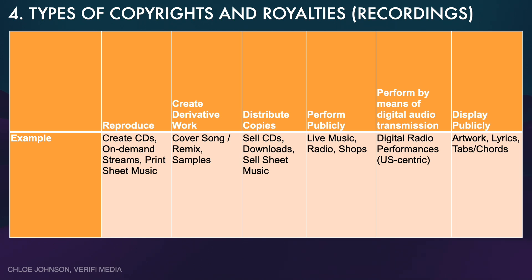If you watched the publishing video you might already be familiar with the different types of copyright, but very briefly in the US, the type of copyright issued for a musical work or sound recording includes: the right to reproduce that piece of work, the right to create derivatives such as covers and remixes, the right to distribute copies, to perform publicly, to perform by means of digital audio transmission, or to display publicly.